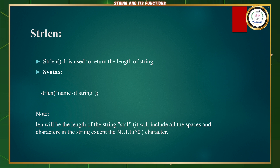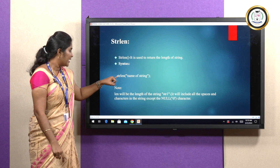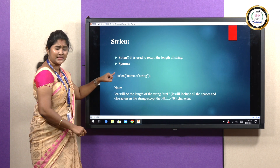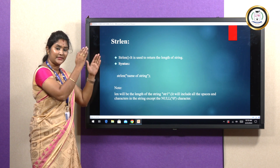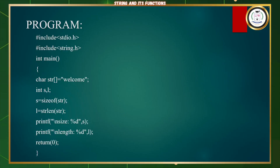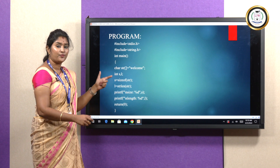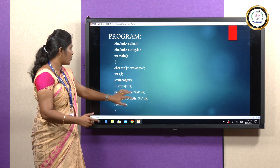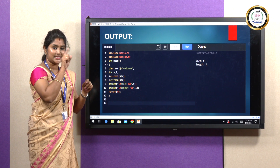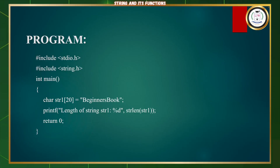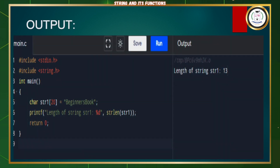String length: this function displays the number of characters available in a string. The syntax is strlen(name_of_string). For example, we give 'welcome' as the input string. Welcome has 7 characters (W-E-L-C-O-M-E), so the length is 7 and its size is 8. In another example, 'beginner's book' has a length of 13.